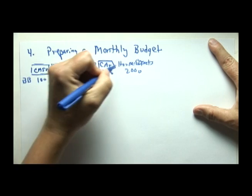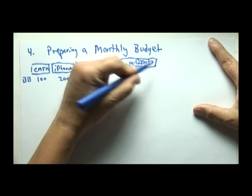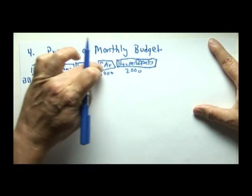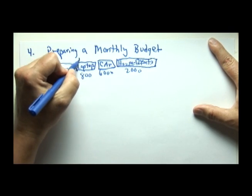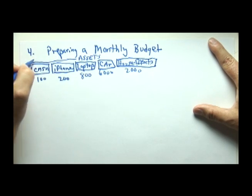In accounting, when we label a particular asset or a liability, the label is called an account. So we've just labeled 1, 2, 3, 4, 5 assets under the category, or accounts under the category assets.